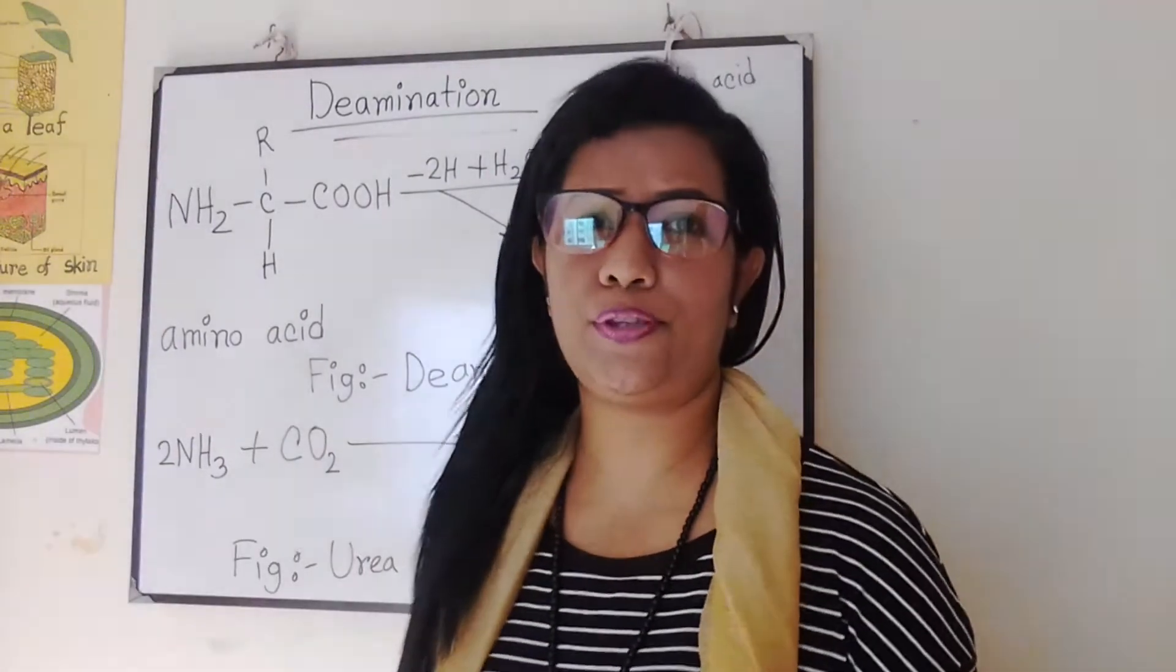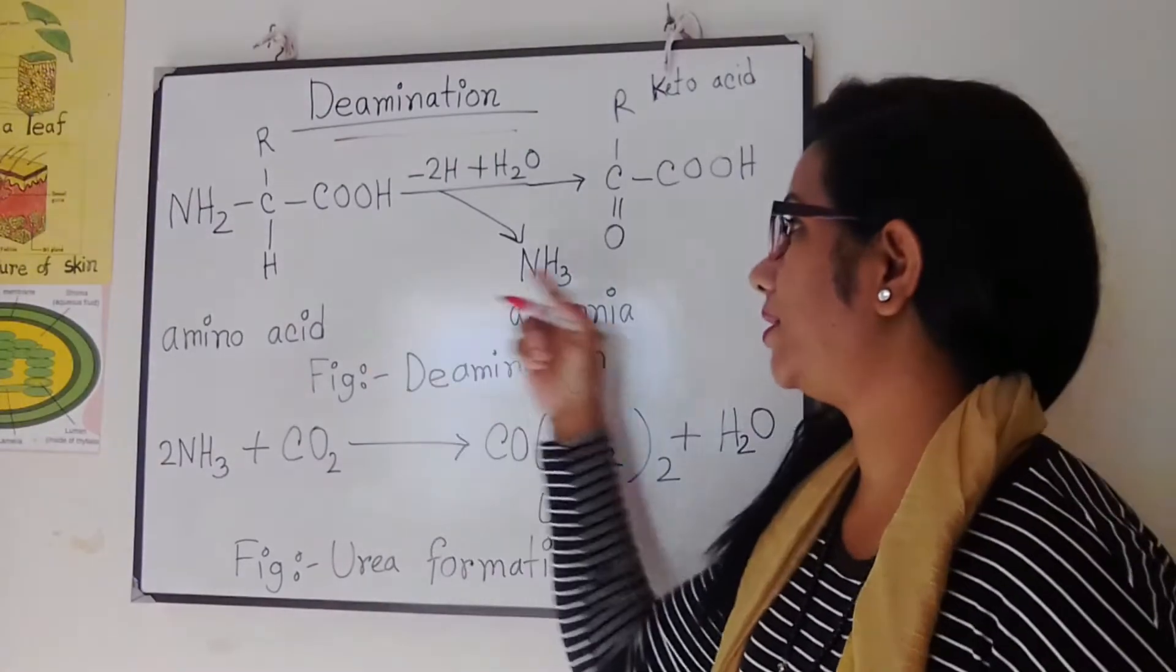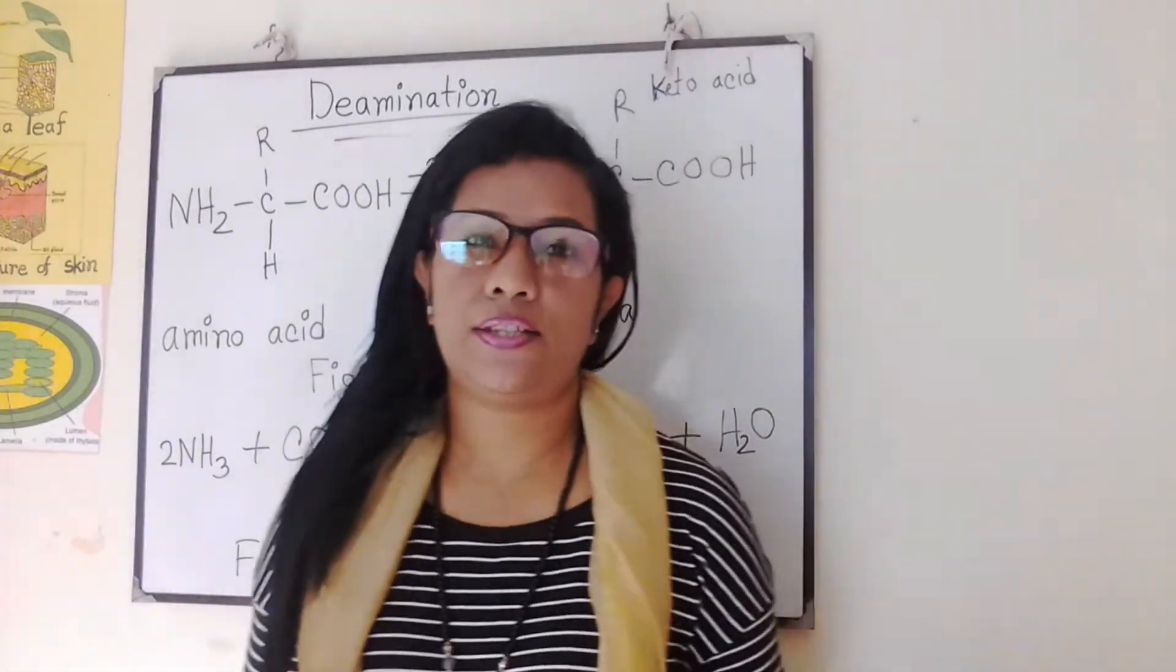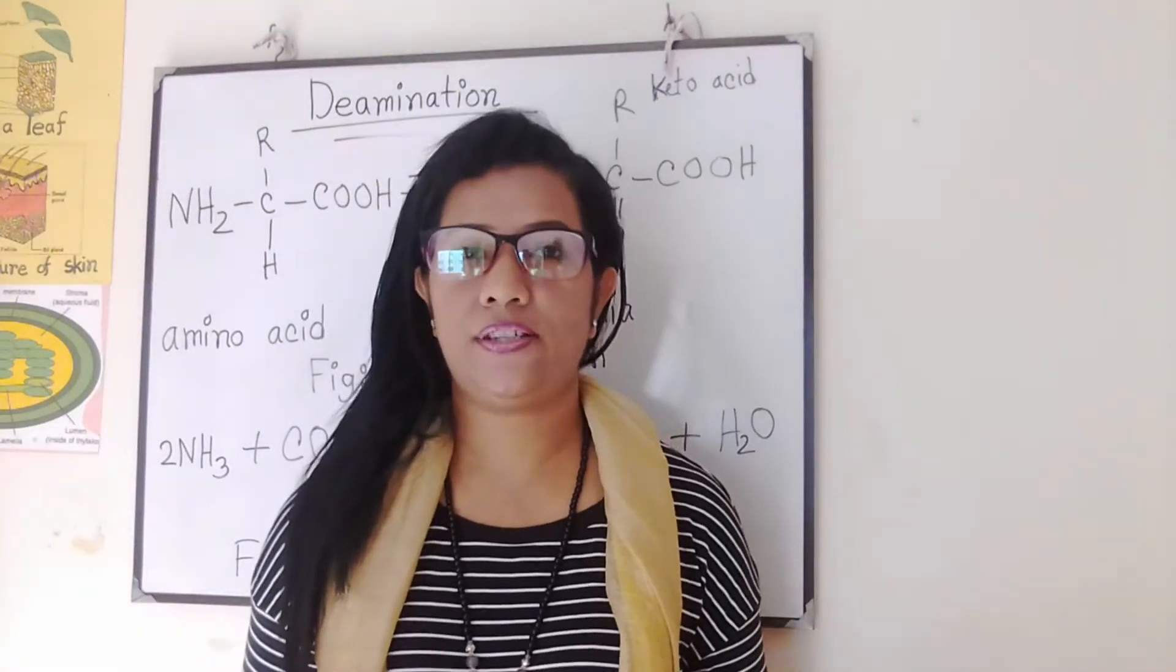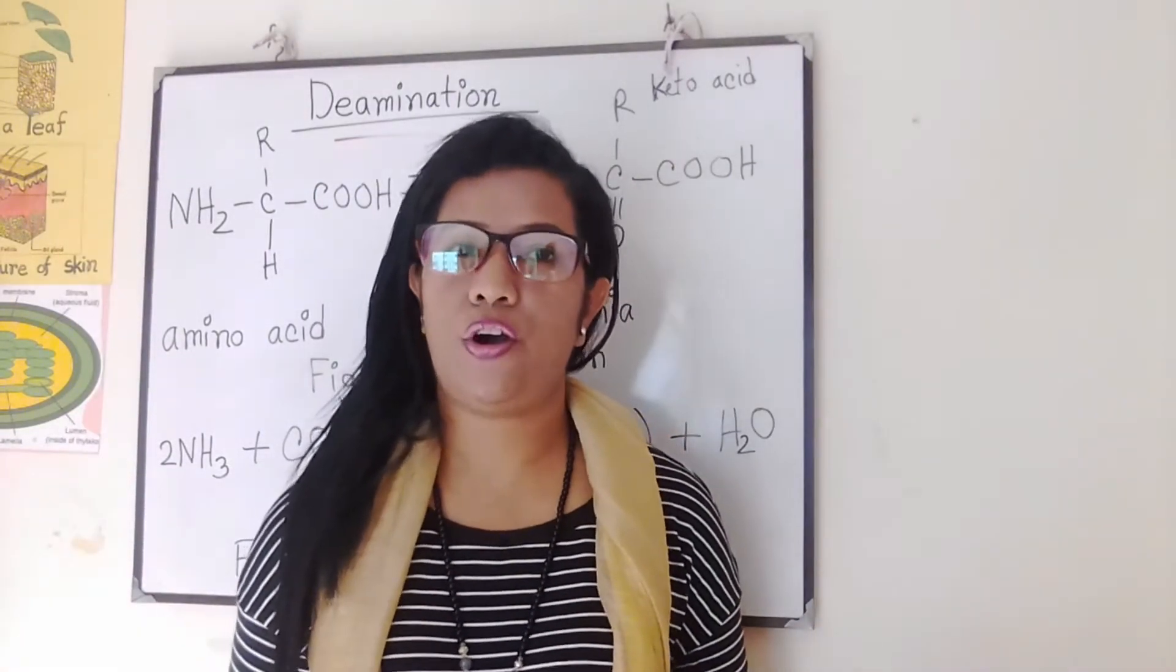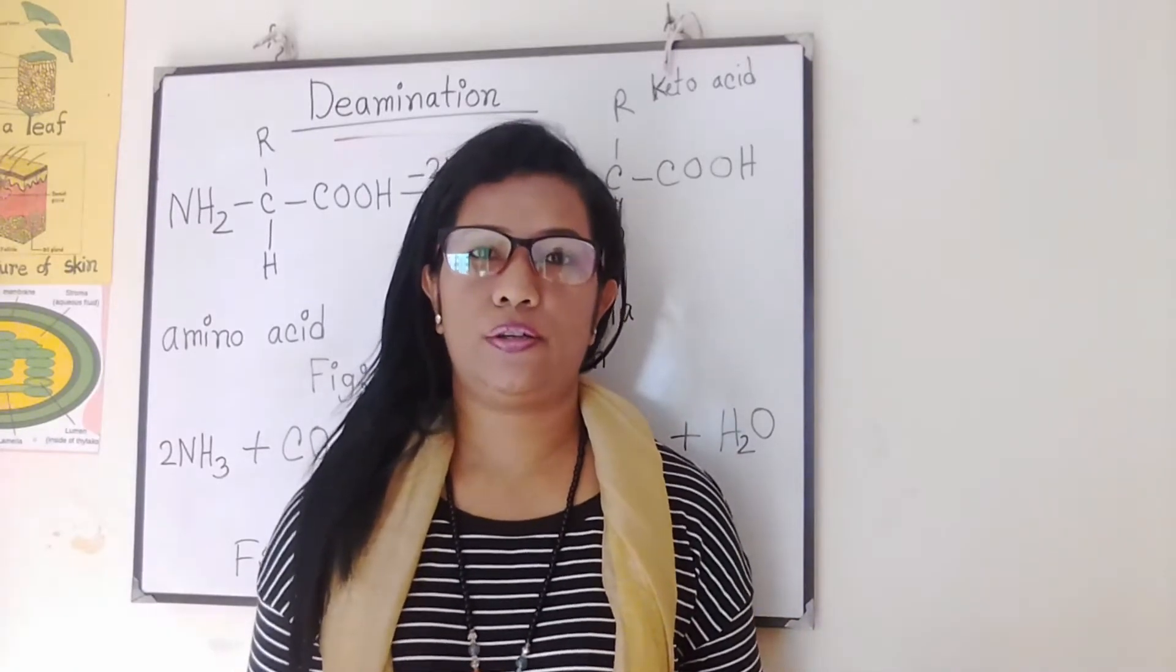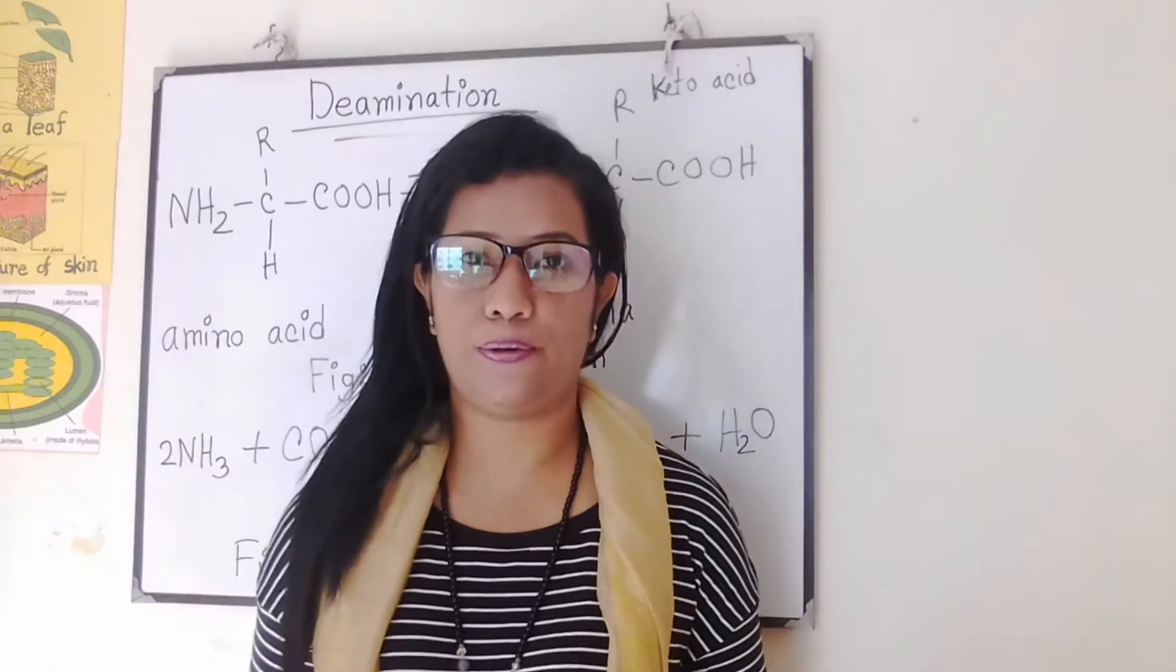This is the process. This diagram shows how de-amination takes place in the liver cells. The amino group of an amino acid is removed together with an extra hydrogen atom.